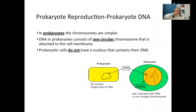We're going to start off talking about prokaryote reproduction and prokaryote DNA. In prokaryotes, the chromosomes are simpler. DNA in prokaryotes consists of one circular chromosome that's attached to the cell membrane. Prokaryotic cells do not have a nucleus — no nucleus, no membrane-bound organelles. We have free-flowing DNA in there, and it is a single loop.